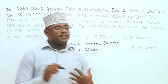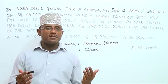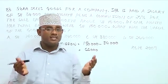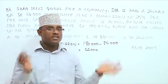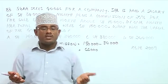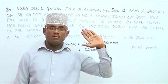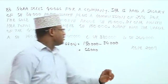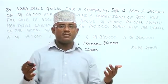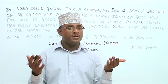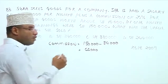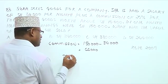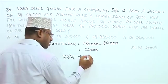We know that the commission she gets is 20% of those sales on which she is entitled to receive commission — that is, sales above $10,000. So if 20% of those commissionable sales equals $66,000, we can work backwards to find the total value of those sales.